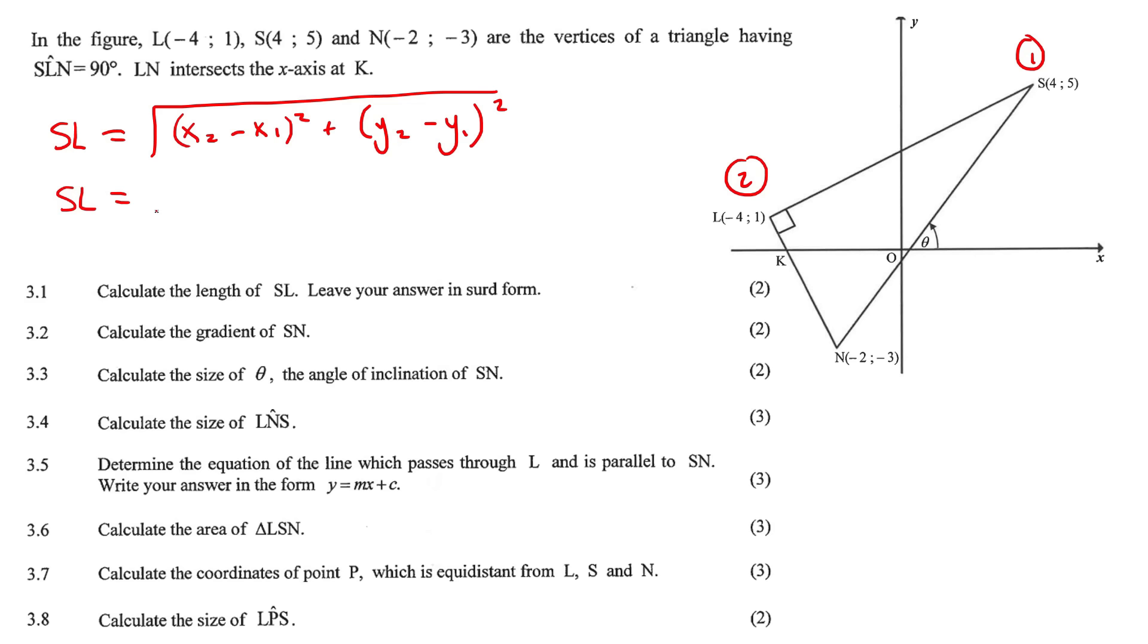So now you just go fill in the formula, which is x value of point number 2, which is minus 4, x value of point number 1 is 4, y value of point number 2 is 1, y value of point number 1 is 5. Go ahead and just type that all in on the calculator, and you should get 4 square root 5. Leave your answer in a square root, because they said leave your answer in SURD form.